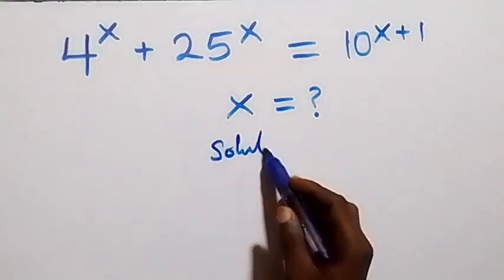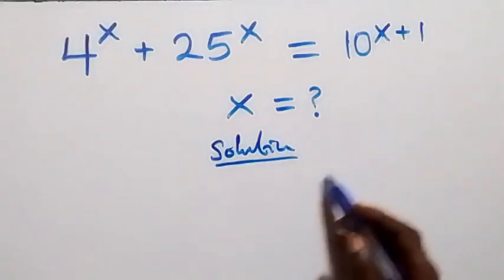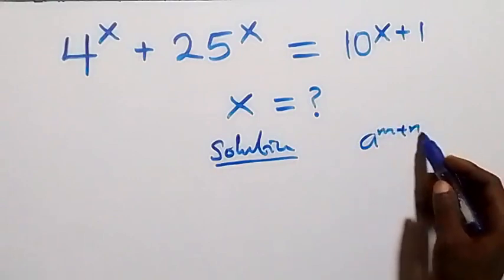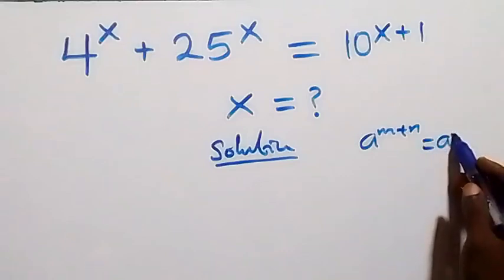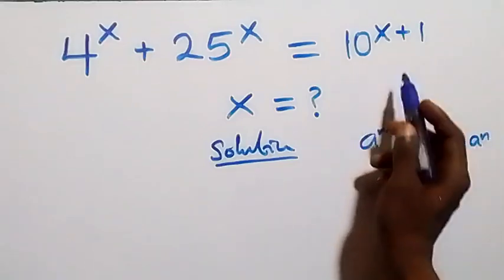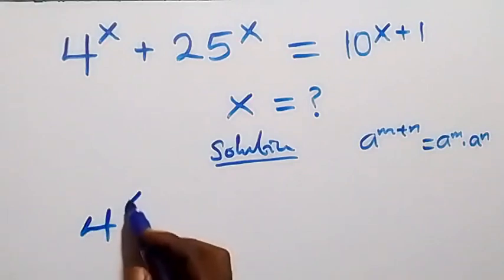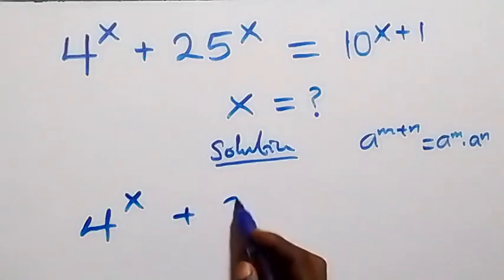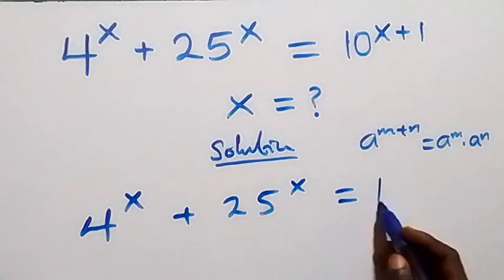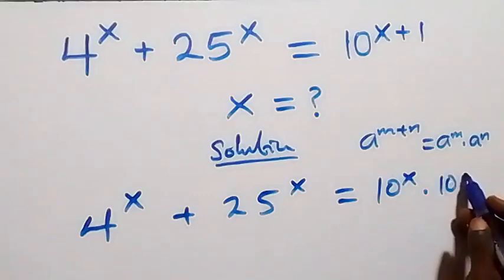From what we have, we can rewrite the right-hand side. Applying the law of indices, which is a raised to power n times a raised to power n, this equation becomes 4 raised to power x plus 25 raised to power x, equals 10 raised to power x times 10 raised to power 1.